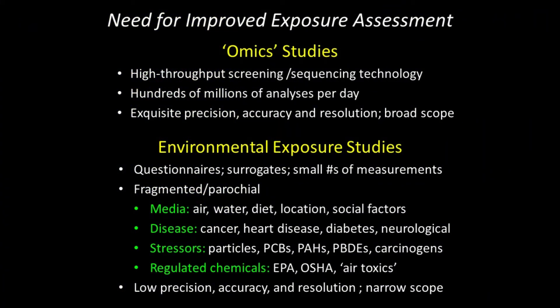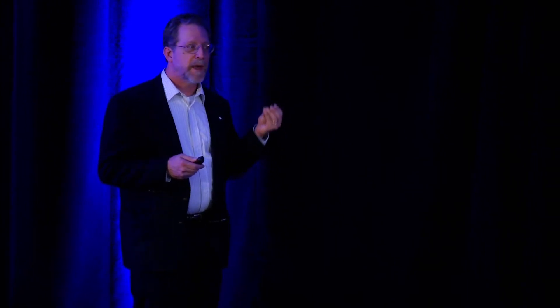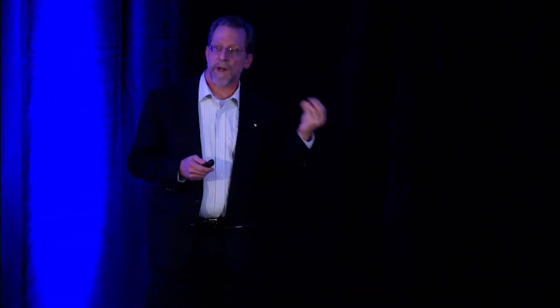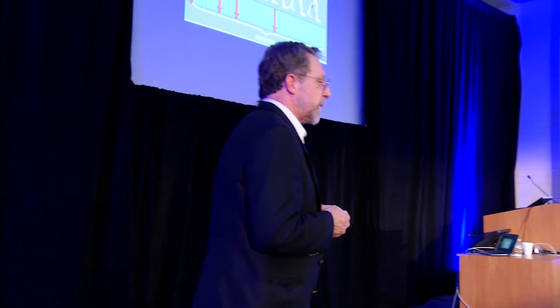So there's quite a dichotomy here in terms of the tools we use for the genome, or omic studies, and those we use for exposure studies. Whereas the omic studies have high-throughput methods, they measure hundreds of millions of samples every day, and they have high resolution, high precision, and high accuracy, and therefore a broad scope in the conclusions you can draw. And in stark contrast, we're really in the stone age still in terms of exposure measurements. We base most of our exposure estimates on questionnaires, surrogates, crude models, in some cases limited numbers of actual samples. And even when we do that, we're typically fragmented along parochial boundaries, such as what kind of medium, what kind of disease, what kind of stressors, and we're often focusing on chemicals that are already known and already regulated. As a result, we end up with low precision, low accuracy, low resolution, and not as much as we'd like to get out of the studies.